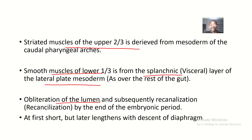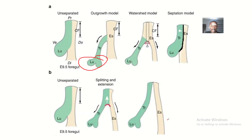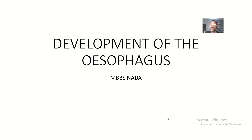There is obliteration of the lumen and subsequent recanalization by the end of the embryonic period. Initially, the esophagus is short, but it later lengthens with the descent of the diaphragm. During embryonic stages the diaphragm is positioned high, but as it descends and the body grows, the esophagus becomes longer.